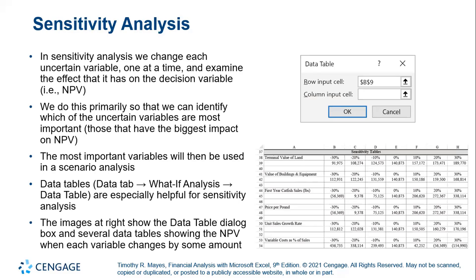Sensitivity analysis. In sensitivity analysis, we change each uncertain variable one at a time and examine the effect that it has on the decision variable — for example, NPV. We do this primarily so that we can identify which of the uncertain variables have the biggest impact on net present value. The most important variables will then be used in the scenario analysis.